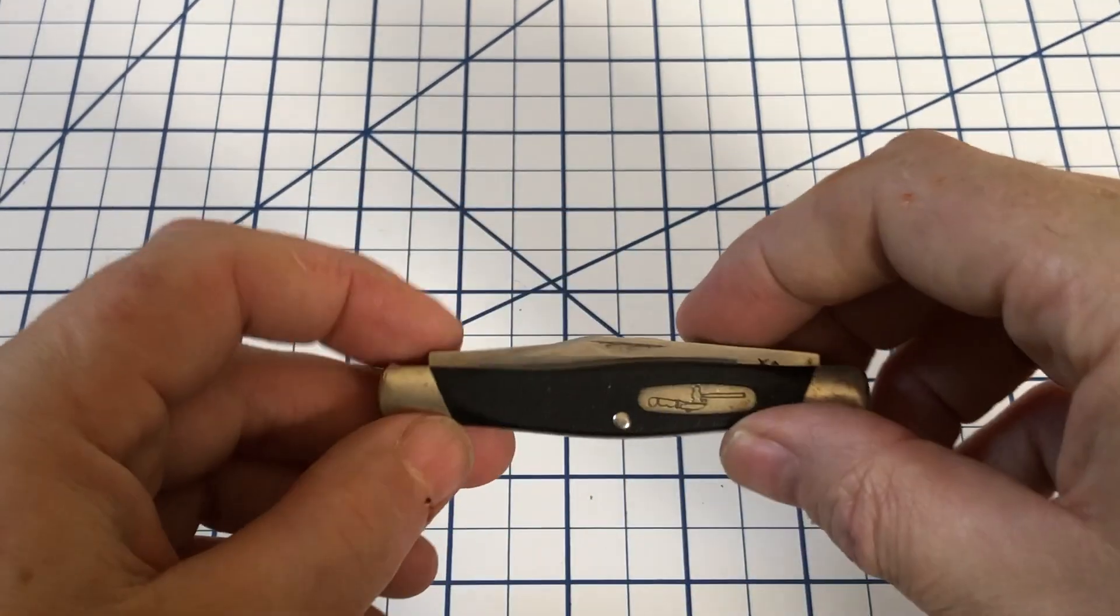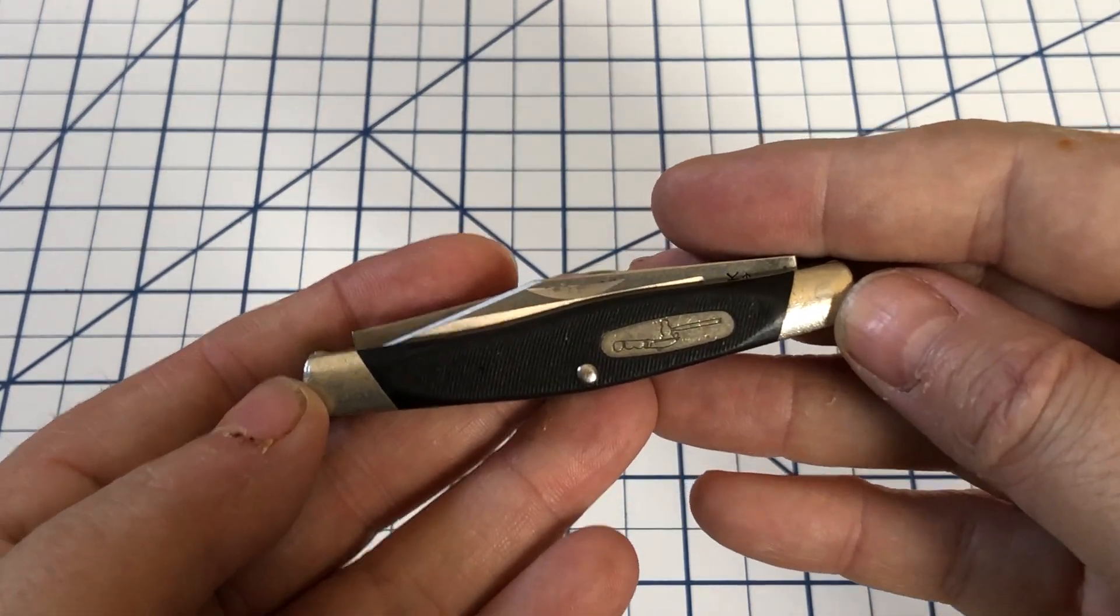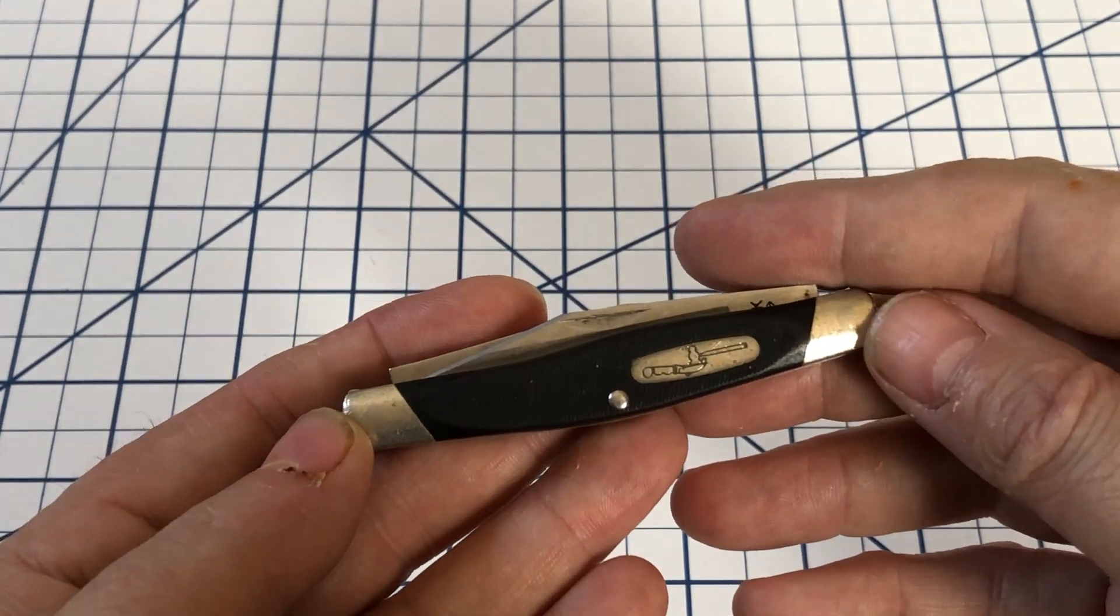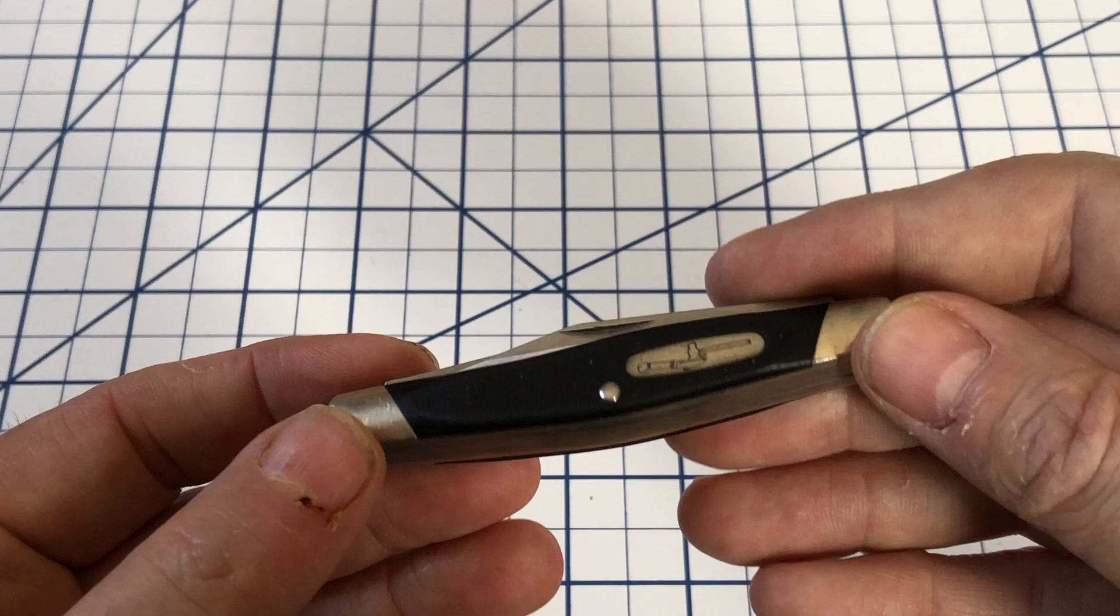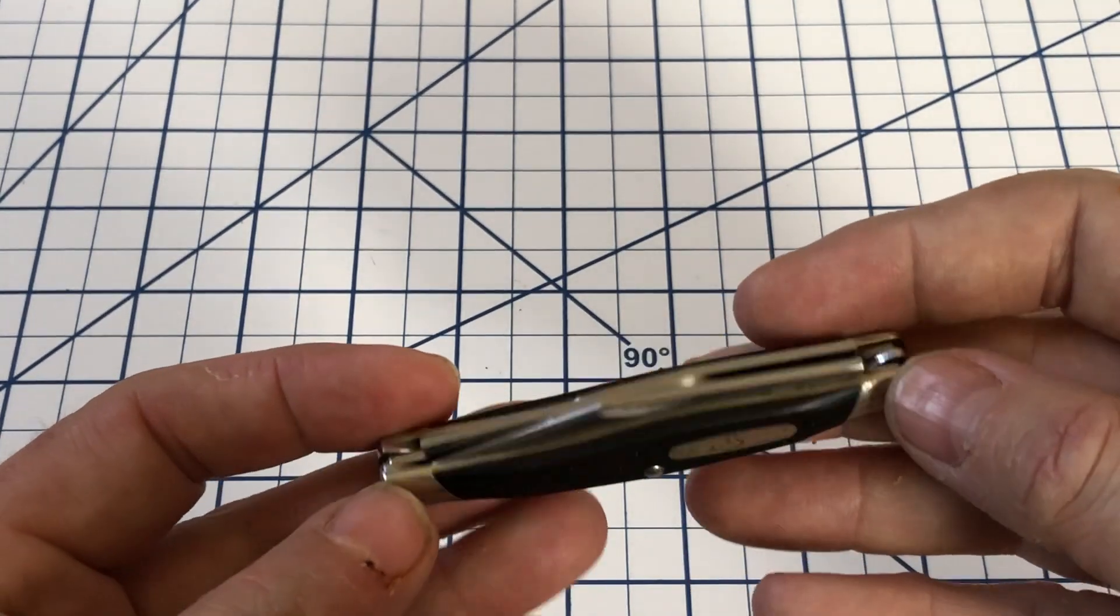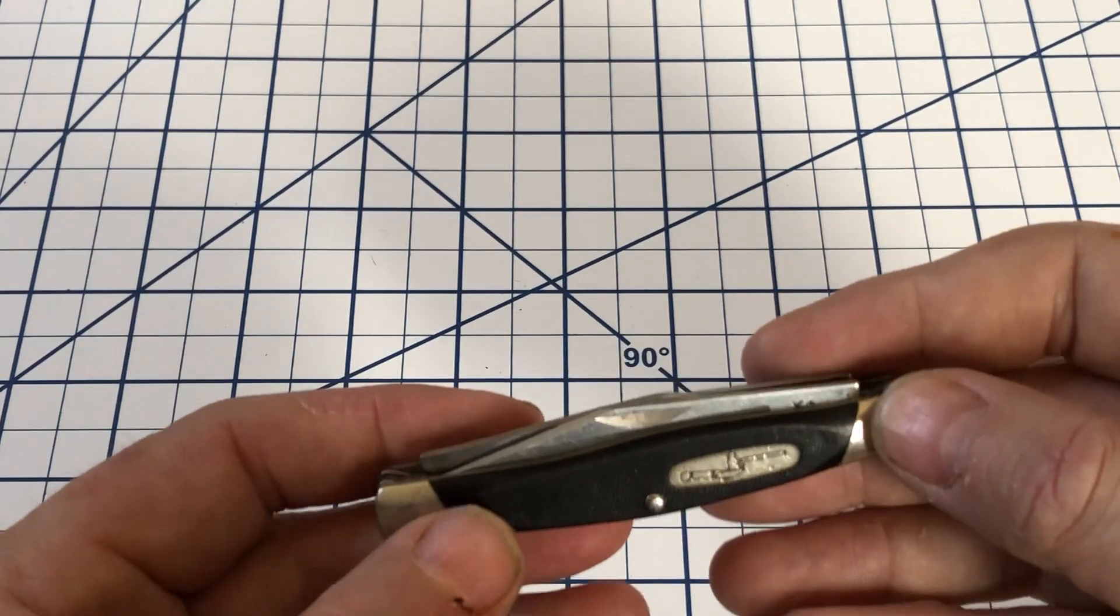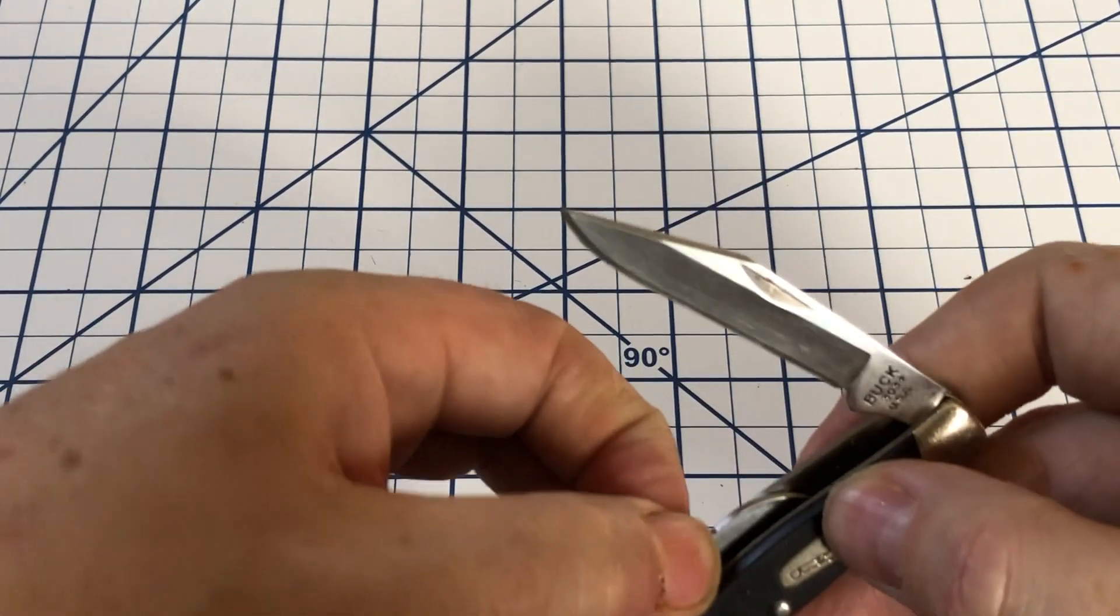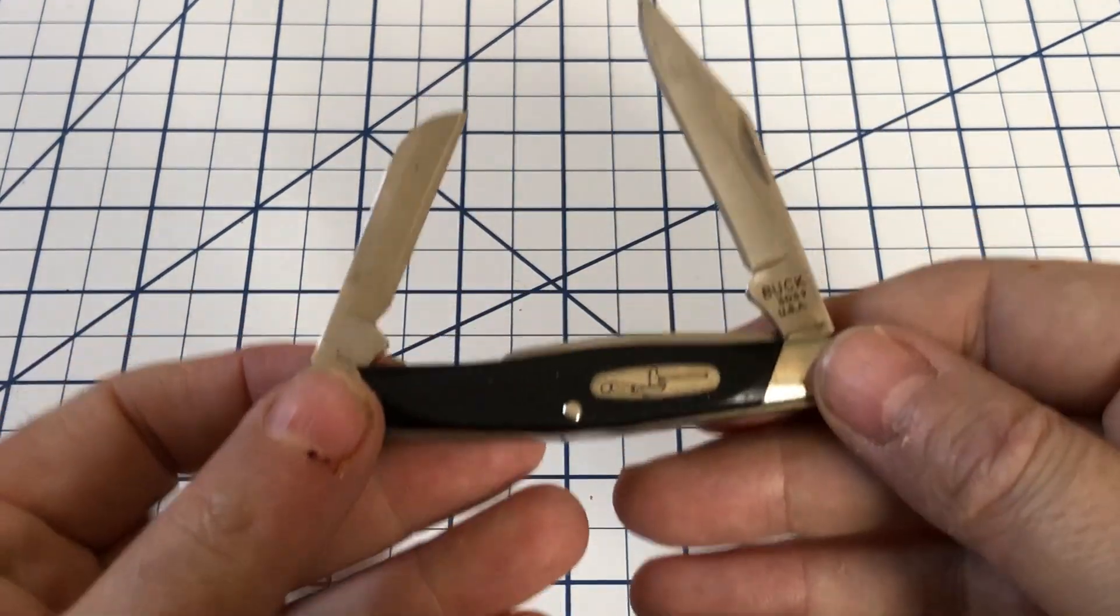Now the blade layout on this Buck 303 has changed over time and it's a little different than the normal Stockman. When Buck originally made their 303, it was laid out more like a normal Stockman with the clip point and the sheep's foot at the same end. And that's what you're typically going to see.